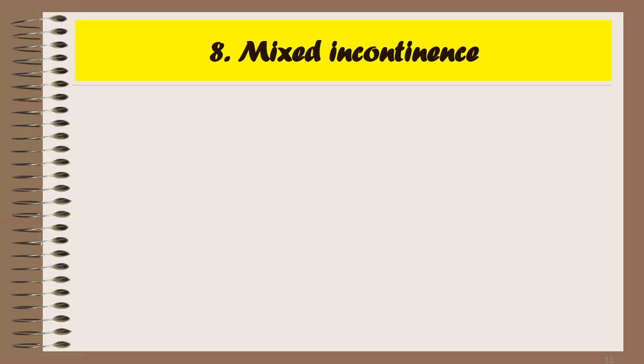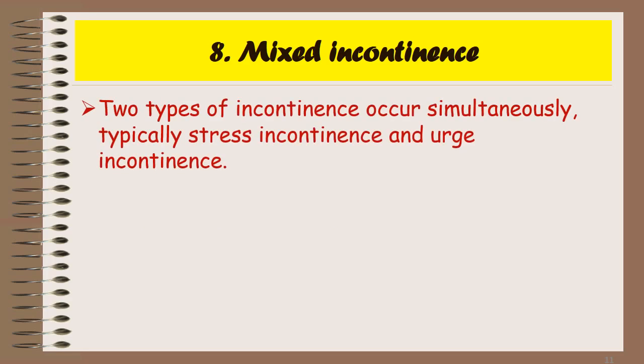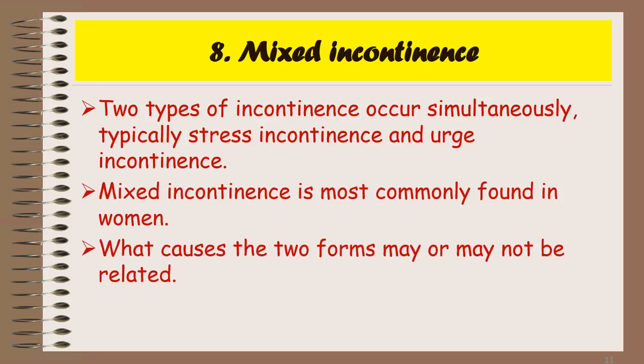The last type of urinary incontinence is mixed incontinence, in which two types of incontinence occur simultaneously, typically stress incontinence and urge incontinence. Mixed incontinence is most commonly found in women, and what causes the two forms may or may not be related.